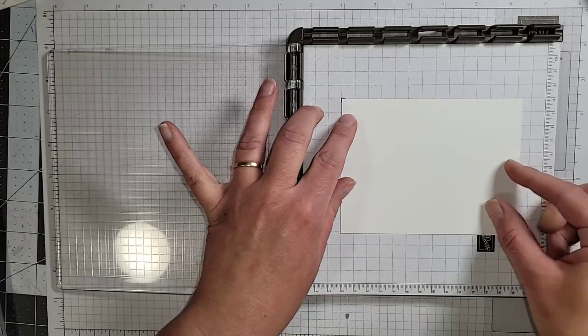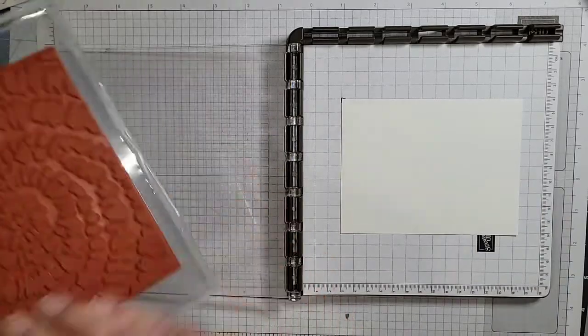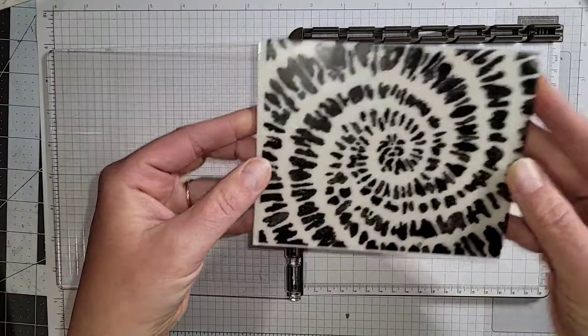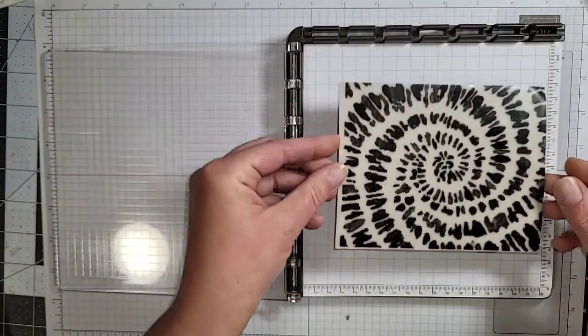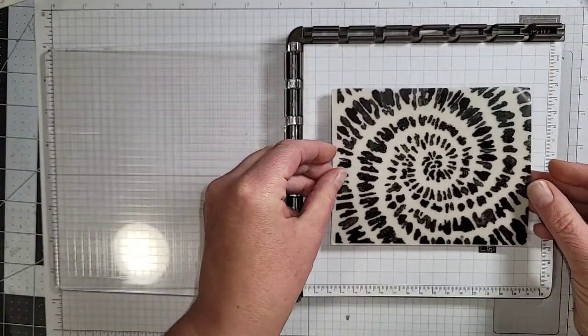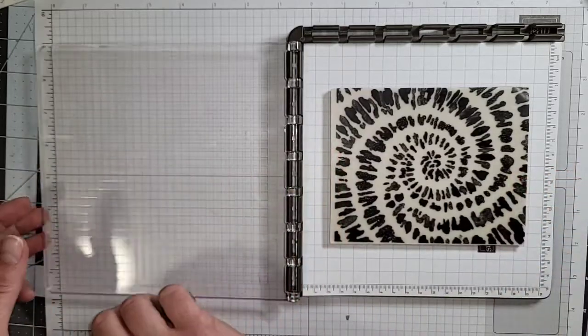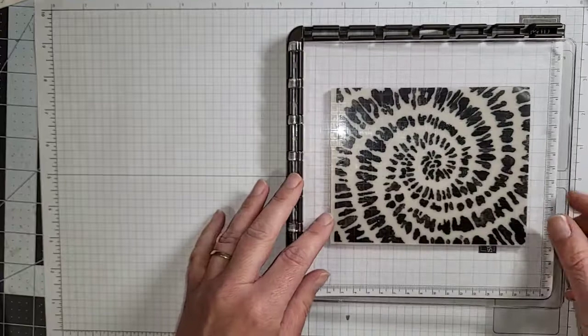All right so I put it back there like that. Now I'm going to take my stamp and this is like I said the big background stamp and I'm going to situate it right over top of my paper and I'm just going to place it down.